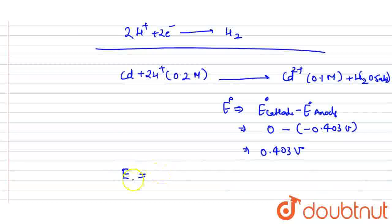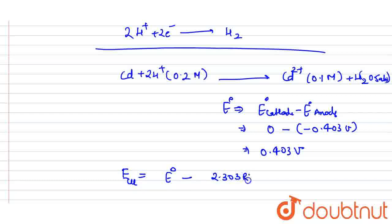Now let's start the Nernst equation. e cell is equal to e0 minus 2.303 RT upon nF. What is log of right side? Cadmium 2 plus and partial pressure will be H2. The partial pressure will be placed in gas form. This is cadmium and here H-plus. Now H-plus 2. That means it will be square.